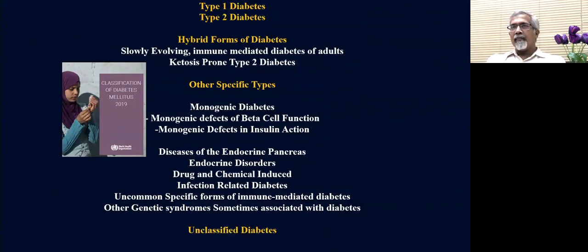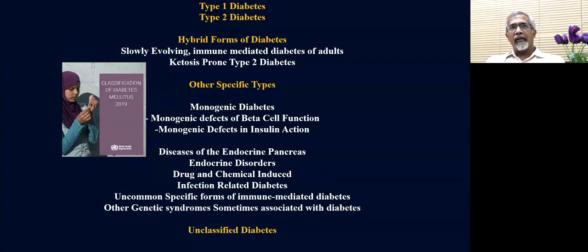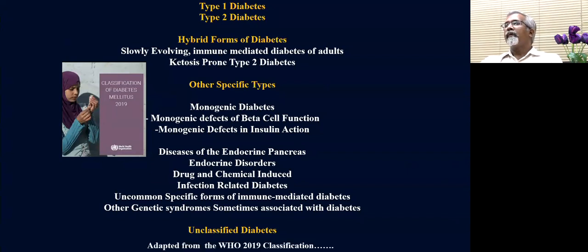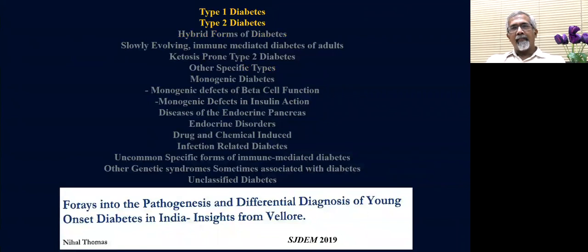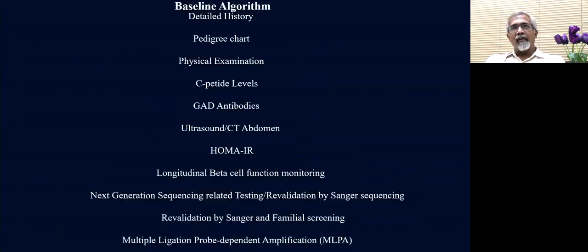We have type 1 and type 2 diabetes as the key and common forms, then the hybrid forms of diabetes involving two types, and then the other specific types and unclassified forms. I will not cover type 1 and type 2 diabetes as those will be covered in the next few days. I will go straight to the baseline diagnostic algorithm.